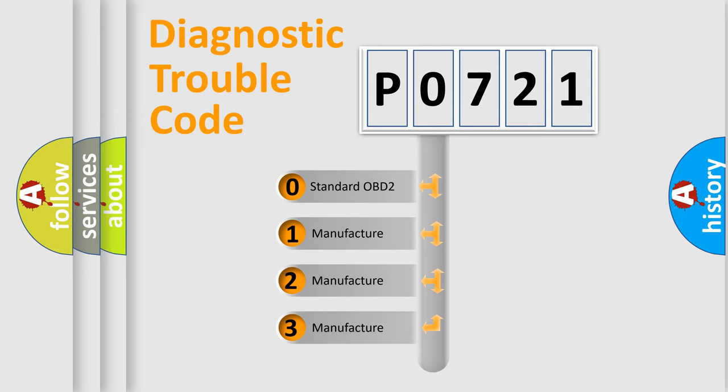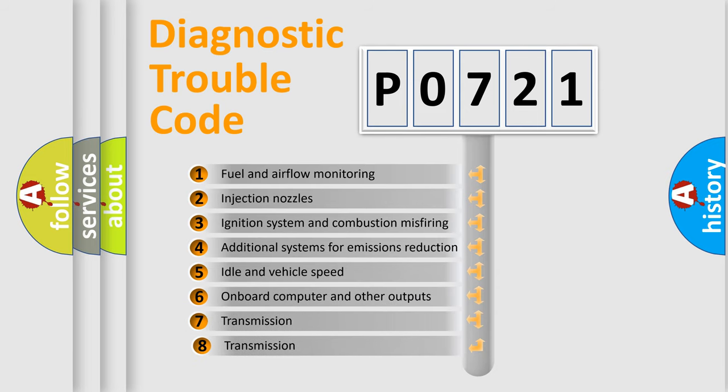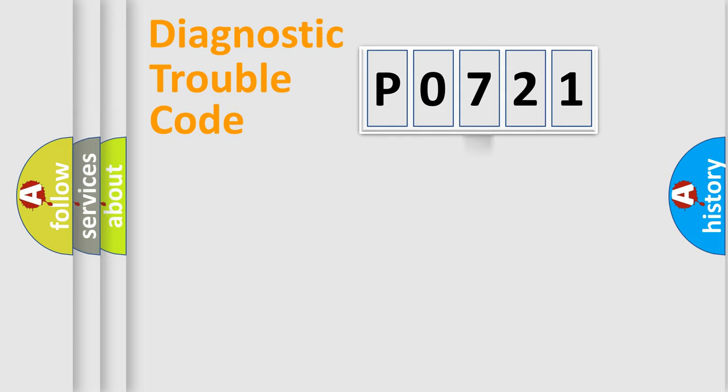If the second character is expressed as zero, it is a standardized error. In the case of numbers 1, 2, 3, it is a manufacturer-specific error. The third character specifies a subset of errors. The distribution shown is valid only for the standardized DTC code.